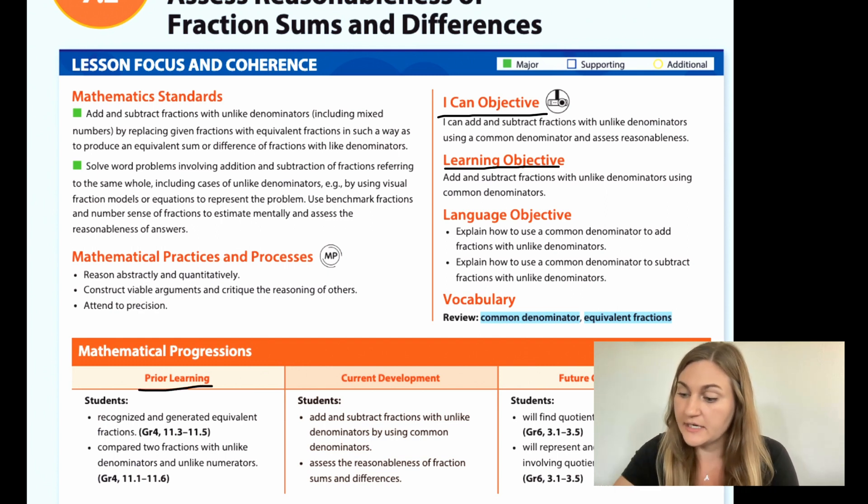And the prior learning said students recognized and generated equivalent fractions, and students compared two fractions with unlike denominators and unlike numerators.